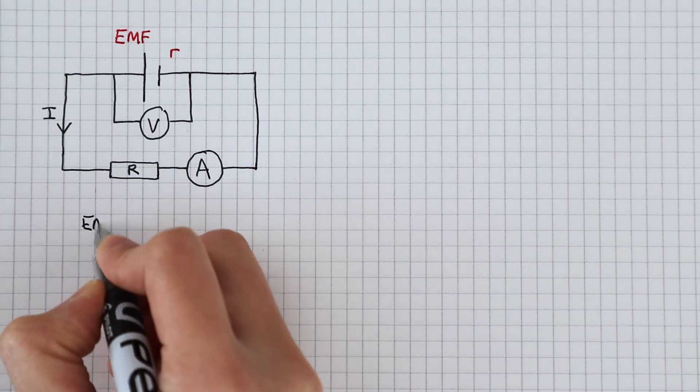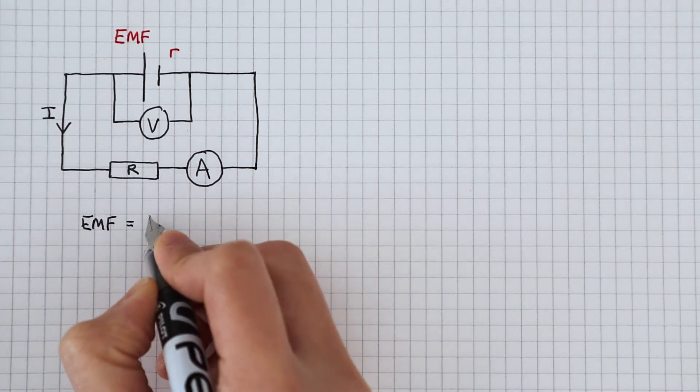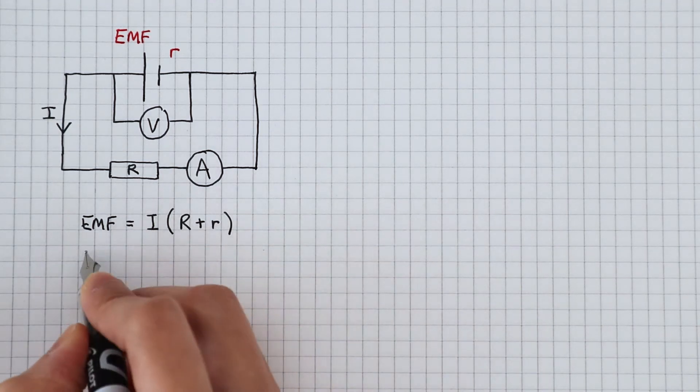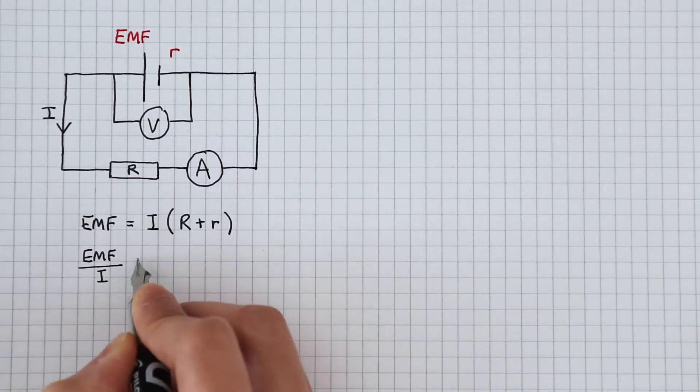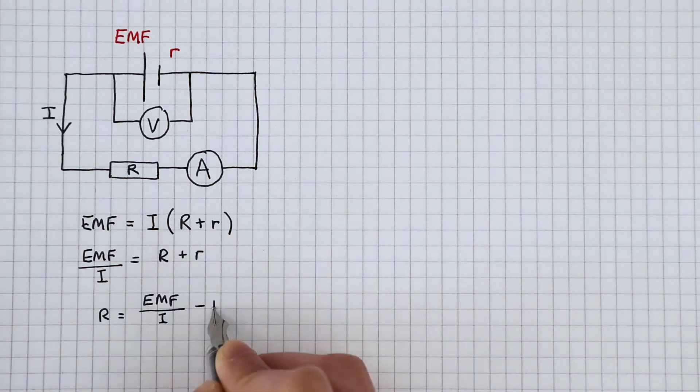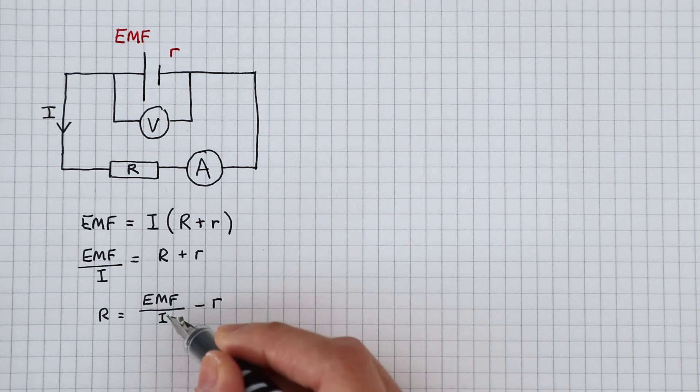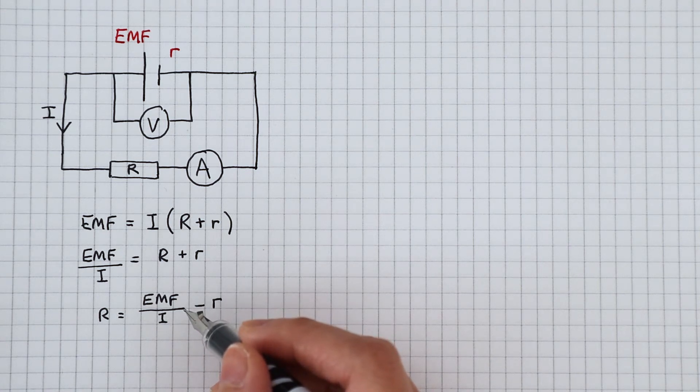The equation for EMF is the current times the load resistance plus the internal resistance. We can rearrange this. You'll see in a moment why this form is more useful. And we can also rearrange this fraction here as EMF times 1 over current.